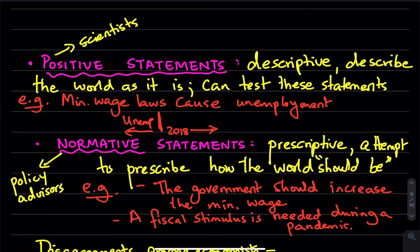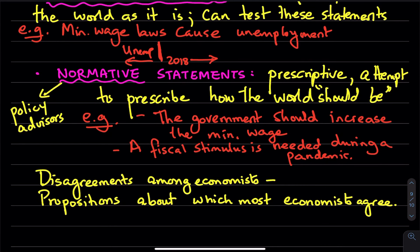So statements like these are normative statements. Now I would like you to go to the book and read about disagreements among economists, and there are plenty to read about, but also what are some of the propositions about which most economists tend to agree. So that's kind of the end of chapter two.